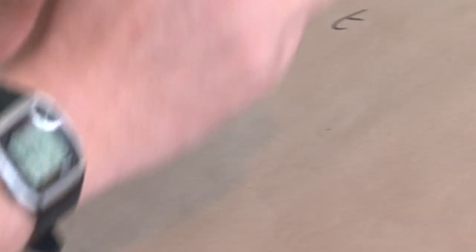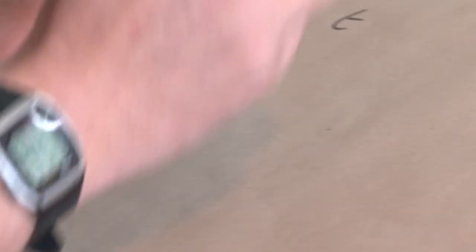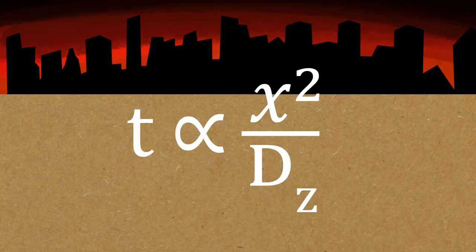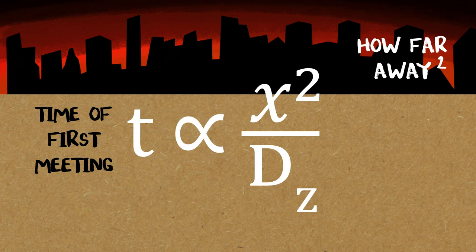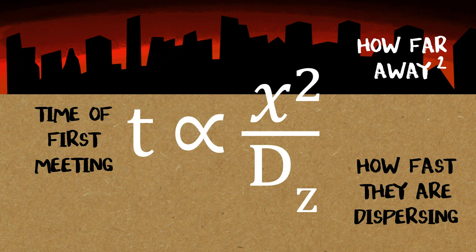From this you get a relation between time, a first interaction, and that's proportional to how far away you are from them, space as being x here, and their rate of diffusion, dz. So t and dz are related. Time of first meeting is approximately proportional to how far away I am from the zombie, x, and how fast they're dispersing, dz.